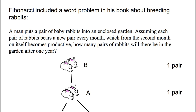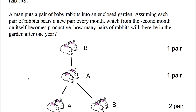Fibonacci includes a word problem in his book about breeding rabbits that became a very famous problem — a famous sequence of numbers that shows up in many fascinating areas. To understand the question and figure out the answer, there is a picture that will help us understand.